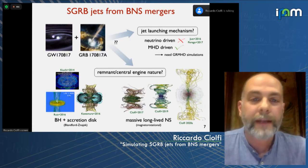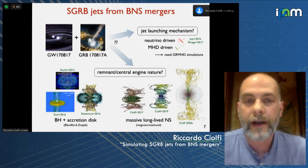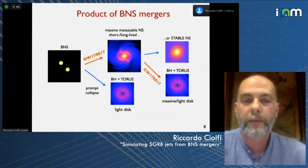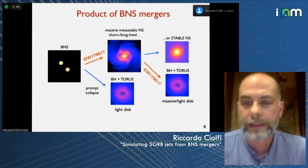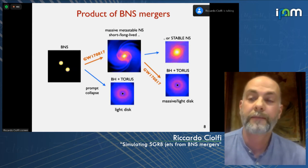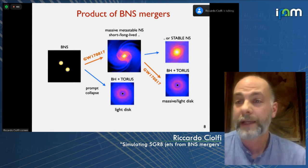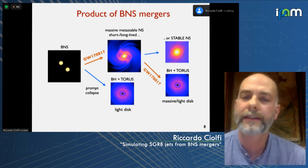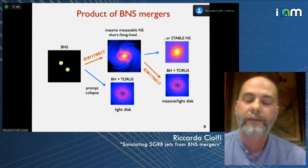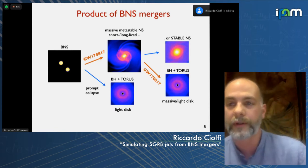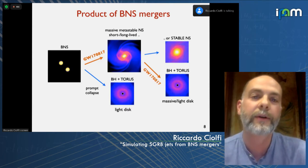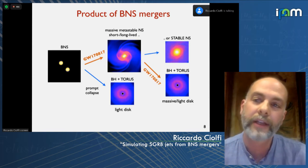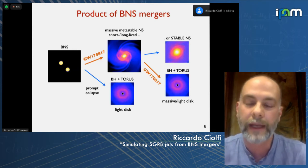Many groups, some represented here at this workshop, are working in this direction. Among the possible products of binary star mergers, the GW170817 event most likely produced a metastable massive neutron star that survived for a while and then eventually collapsed into a black hole. What we don't know is whether the jet was launched before or after the collapse — either by a long-lived or short-lived massive neutron star, or by the accreting black hole.